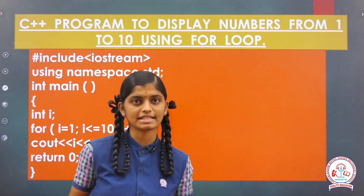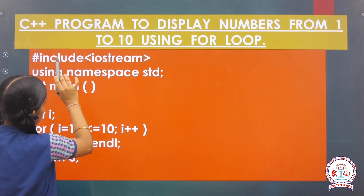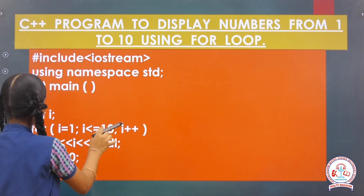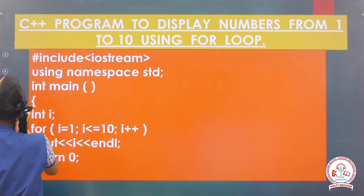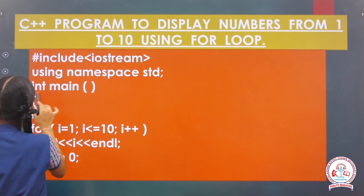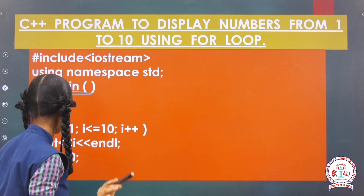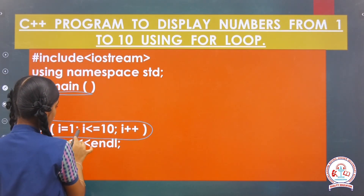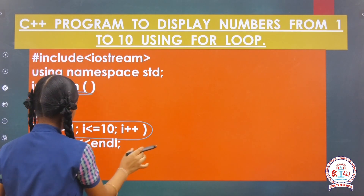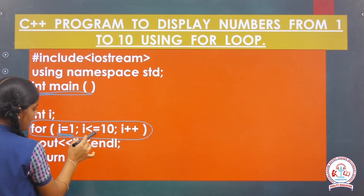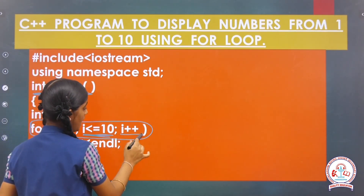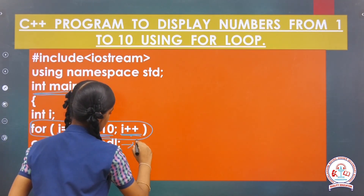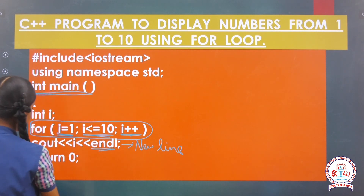Let me see three programs to understand the for loop better. First program: a C++ program to display numbers from 1 to 10 using for loop. First, #include iostream, using namespace std. This is the starting of the program. Next, the for loop statement: the condition is i equal to 1, i must be lesser than or equal to 10, and i plus plus. This is the initializing statement, this is the test expression, and this is the updating or incrementing statement. We want to print i, and the endl statement outputs in a new line. Return 0, closing.